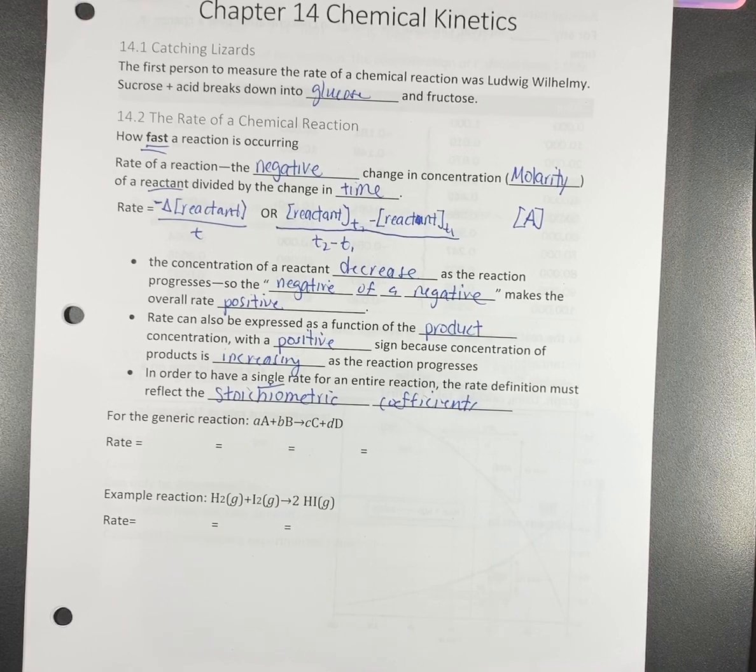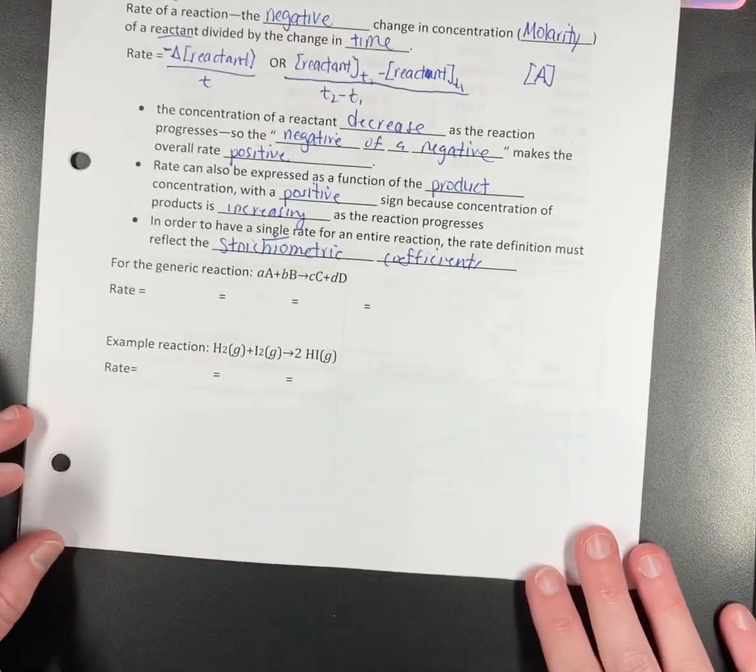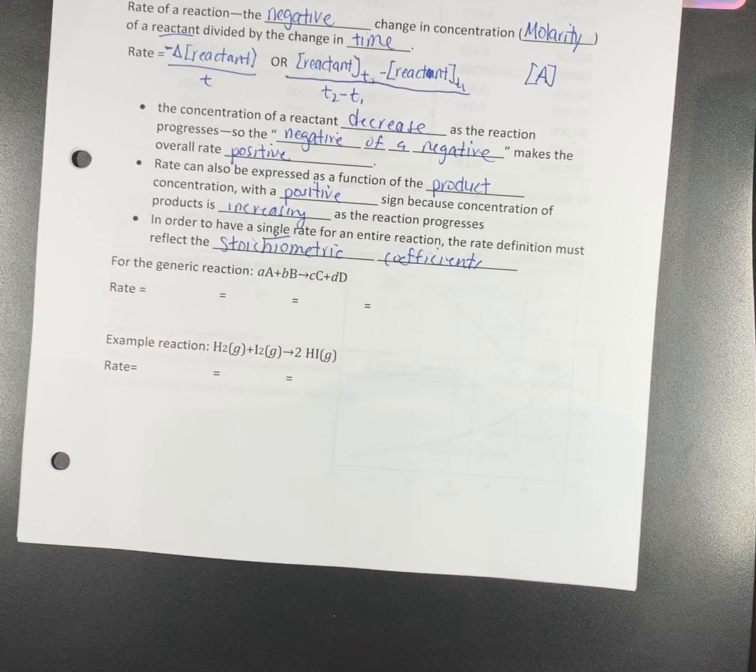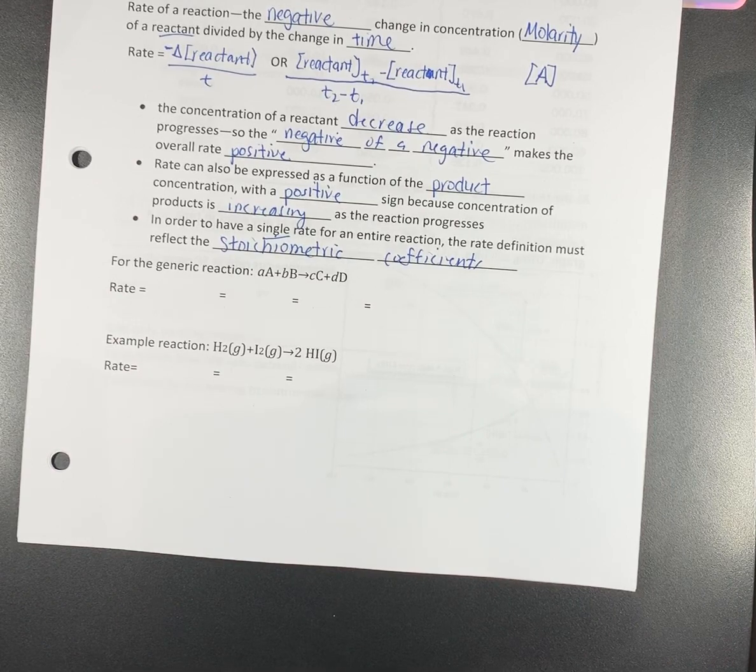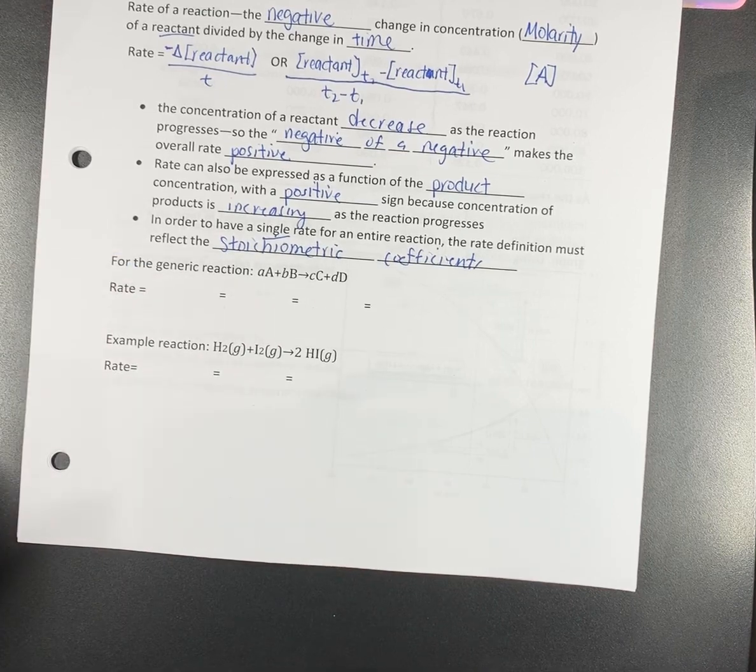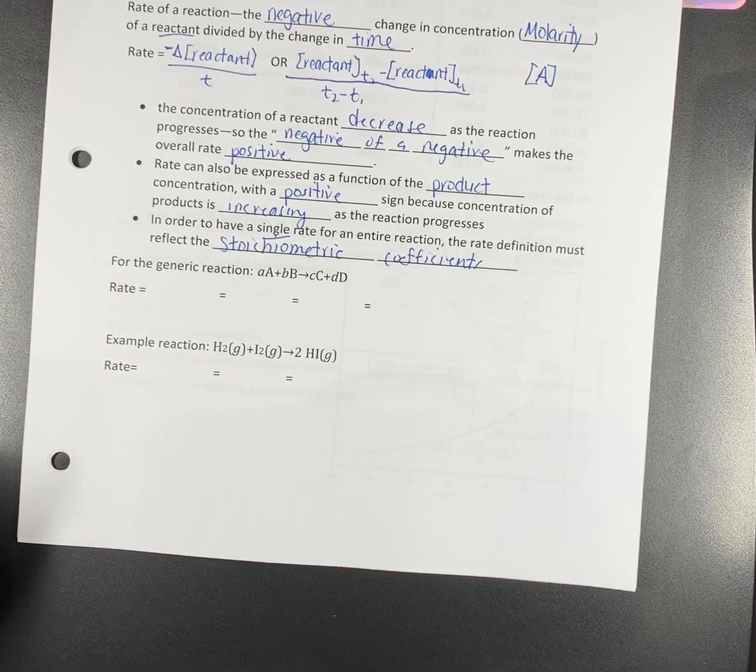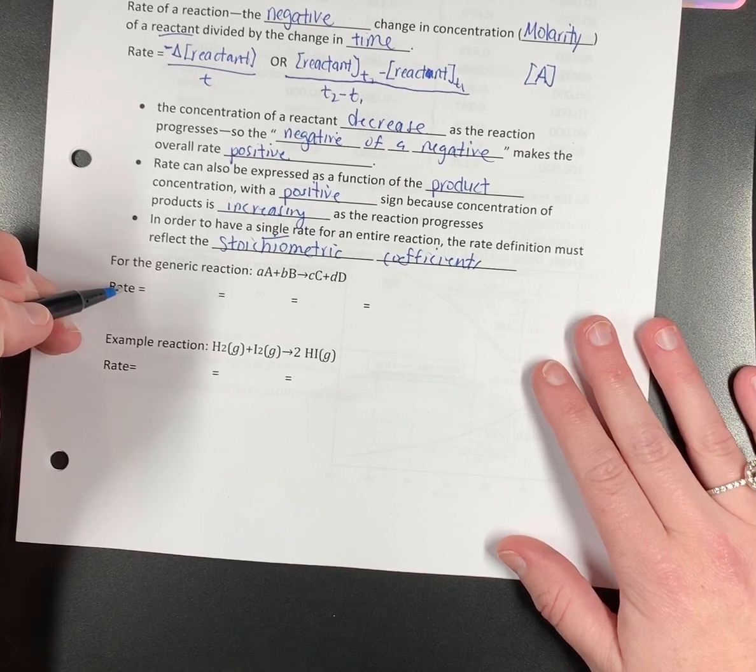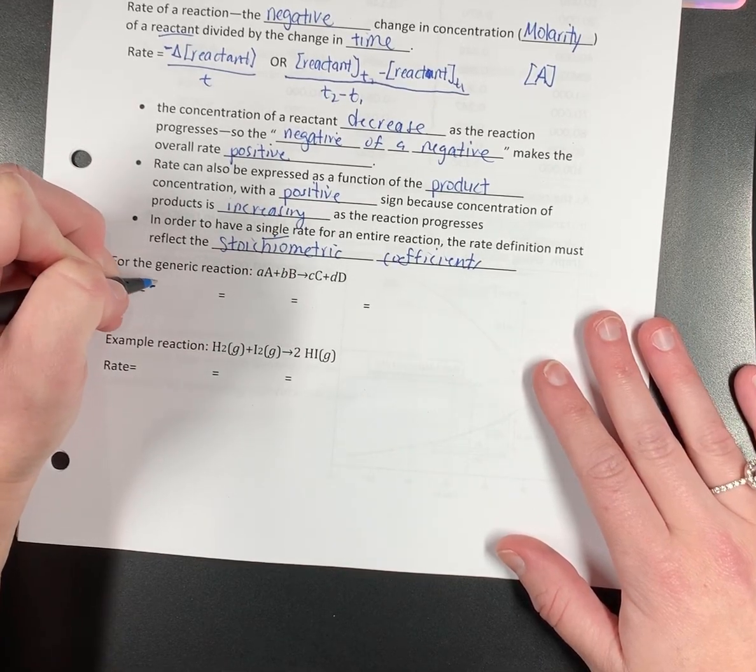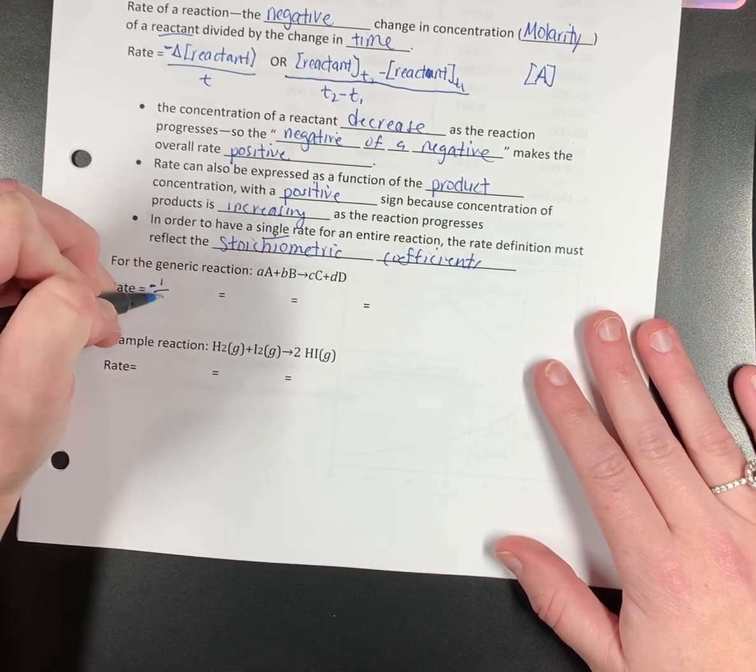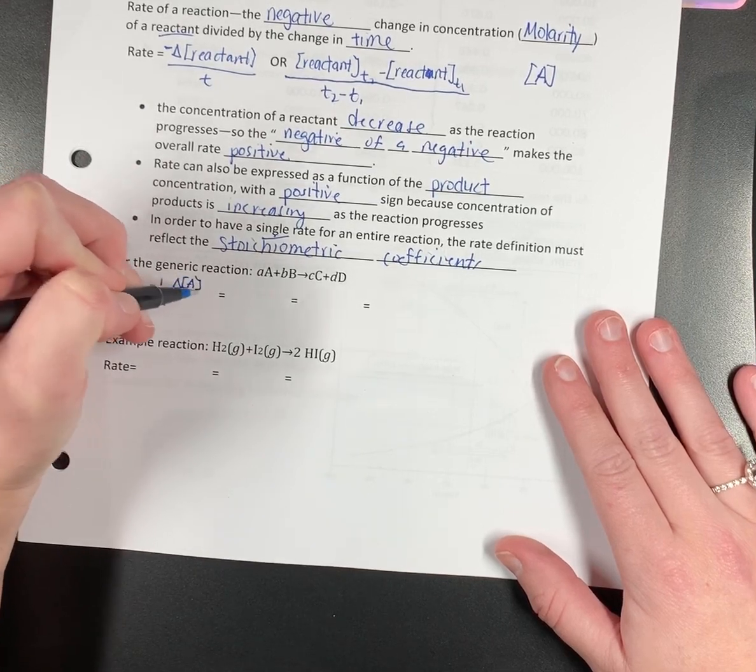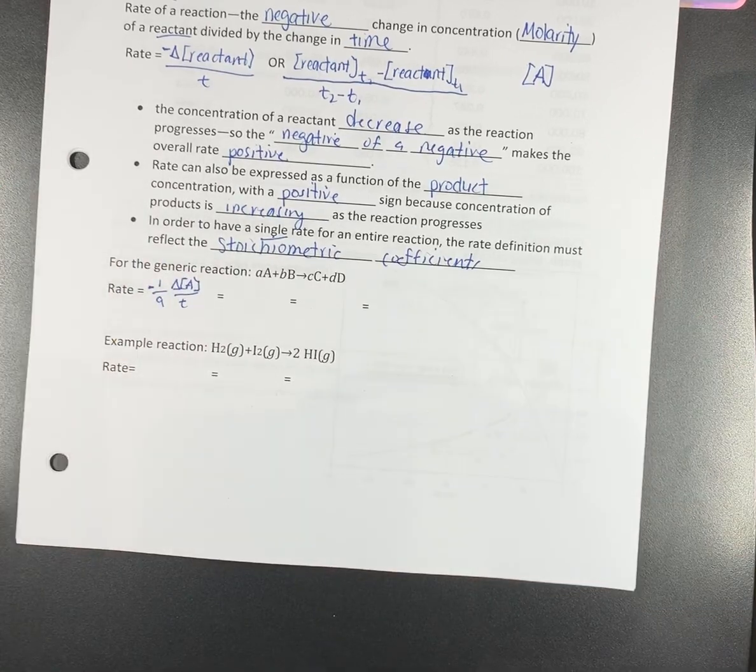So now we're going to be dealing with generic reactions a lot here. Capital letters are the actual substances, so these are going to be your reactants and your product. Little letters are the coefficients of the equation. If you like the generic formula here we go. The rate of this reaction is equal to negative one over little a times the change in the concentration of A divided by time. That's an a not a nine, ignore my bad handwriting.